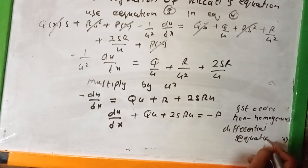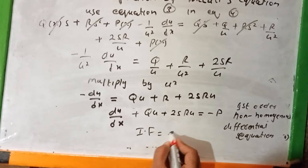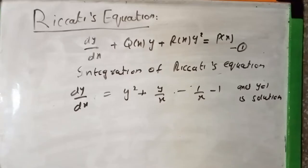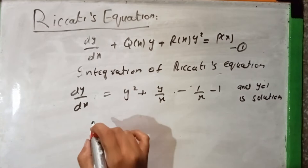The integrating factor for this equation is exp(∫(q + 2s·r)dx). Now we will solve a specific example.